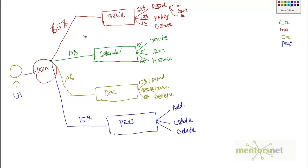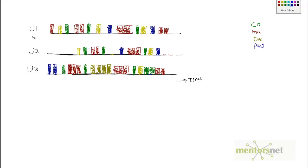If this is what is happening in real life, then whenever I write a test script, my test should do something like this. Let's say another user comes to the system and follows his own navigation pattern. What I've drawn here shows user number 1 doing mail operations, document operations, and so on.